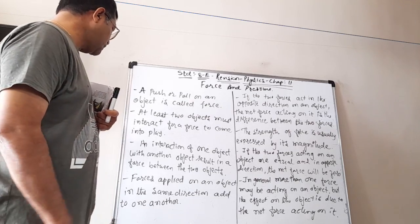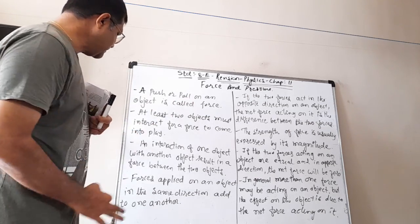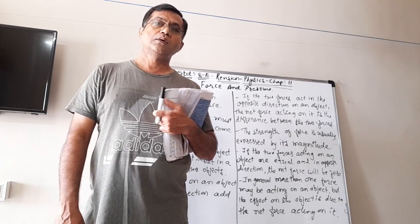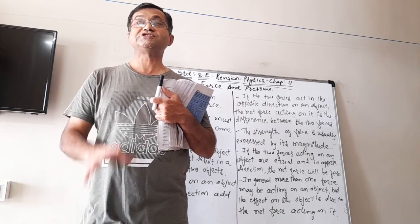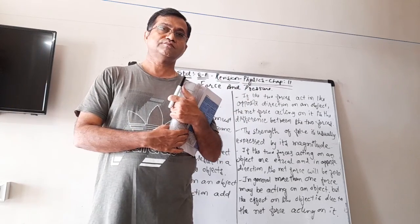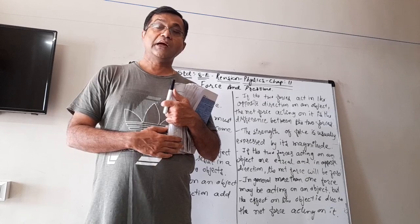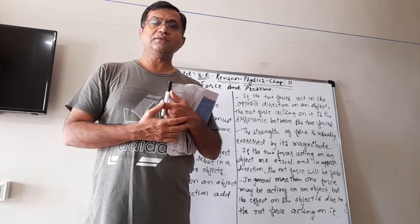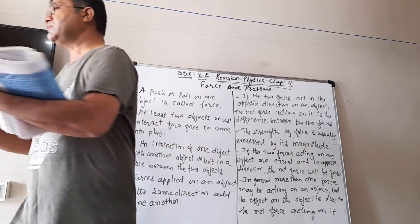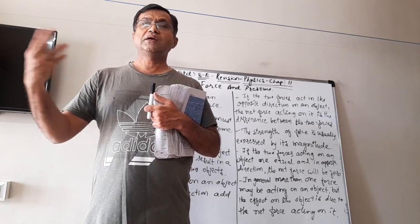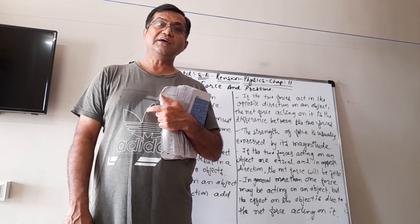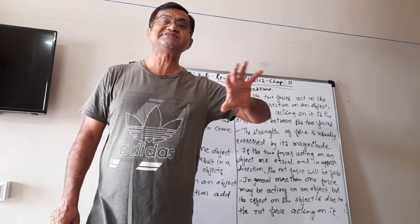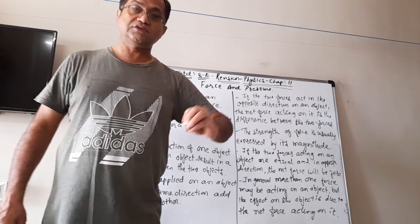Forces applied on an object in the same direction are added to one another. For example, if you are trying to push a very heavy table, big box, or a big stone, and you are trying but it does not move — if you call your friend to help you and you both try from the same direction, then the box can move. Why? Because both the forces are added. It means that when we apply force in the same direction, the forces are added to one another.